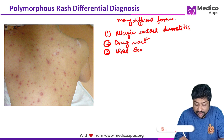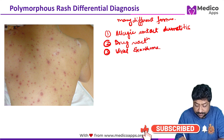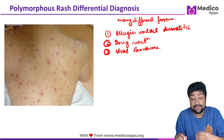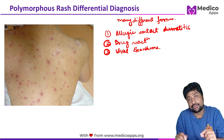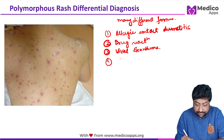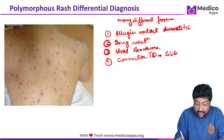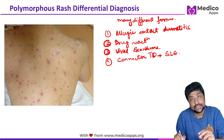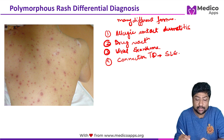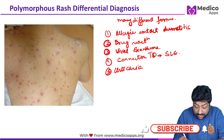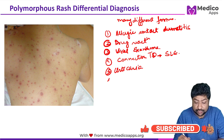The third differential diagnosis, as in this case, is viral exanthemas. Viral diseases like chickenpox, measles, rubella, and fifth disease all present with polymorphous rash. The next important differential is certain connective tissue disorders like SLE and dermatomyositis, which can also present with polymorphic rashes. Urticaria is another condition that presents with polymorphous rashes.